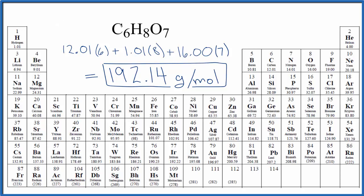So to recap, to find the molar mass for citric acid, we find carbon. We multiply that by the number of carbon atoms. Hydrogen, by the number of hydrogen atoms. And then oxygen, we multiply by the number of oxygen atoms. We get 192.14 grams per mole.